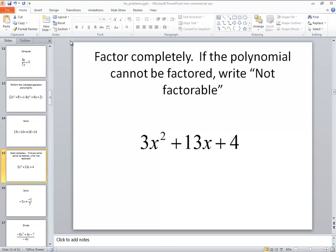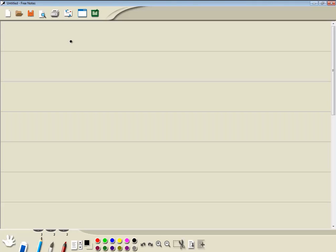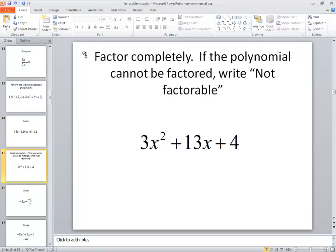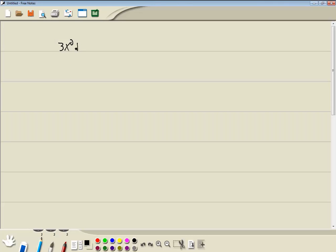Let's take a look at this problem. We want to factor it completely. If the polynomial cannot be factored, write 'Not factorable'. So we got 3x² + 13x + 4.